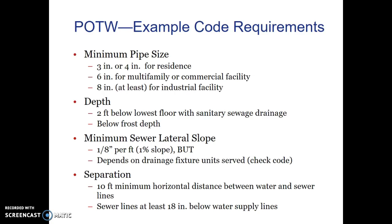Another thing is the depth of the pipe going into the septic system where it exits the house. That pipe has to be at least 2 feet below the lowest floor with any sort of sanitary sewage drainage, and it also has to be below frost depth, which depends upon the area. Where we live right now, the frost depth is probably somewhere around 42 inches.